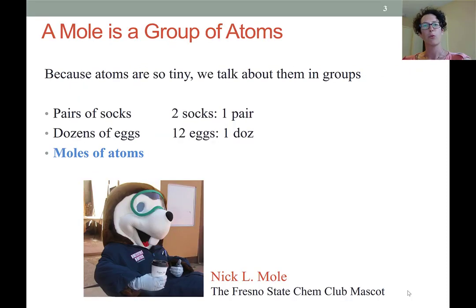So just to start out, we need to know what this word mole means. It's not that cute little animal that burrows in the ground; it is actually a grouping of objects. We commonly use grouping terms in our language like the word pair, meaning two socks, or dozen meaning twelve. A mole is usually used to describe a number of atoms or molecules and that is equivalent to 6.022 times 10 to the 23.